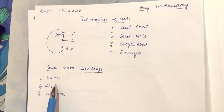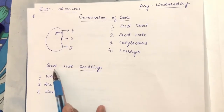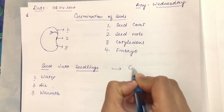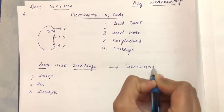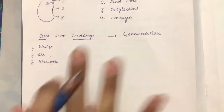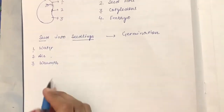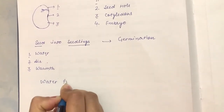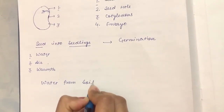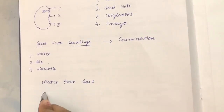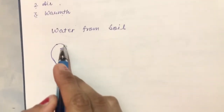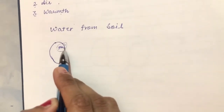When our seed gets these favorable conditions, the seed changes into a seedling. This journey and this process is called germination. Seeds get water from the soil, and when the embryo inside the seed absorbs water, it starts growing and increasing in size.